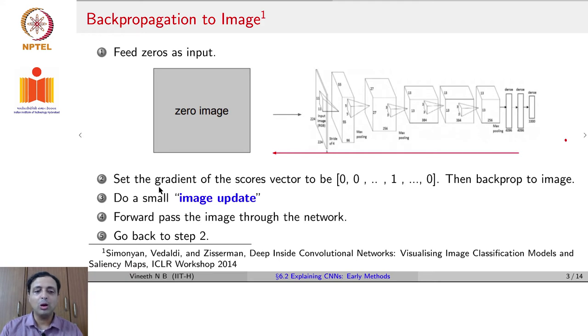And you give this as input to the CNN model. And you now want the final prediction to be a one-hot vector, where the one is in the position of the cat or any other class that you want to get an image of, and zeros in all other places. That is what you would like to see at the last layer, at the output classification layer. But obviously, when you feed a zero images input, you will not be able to get that, you will probably get a different probability vector.